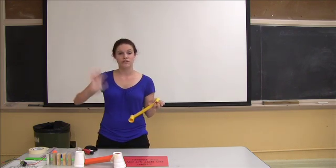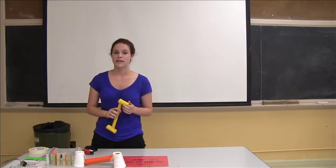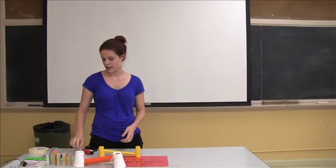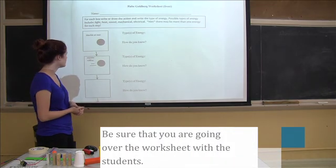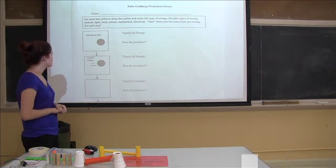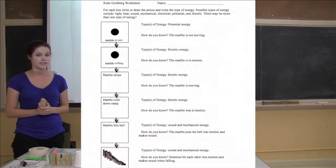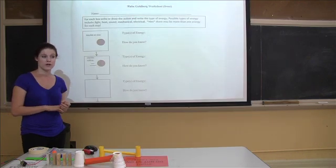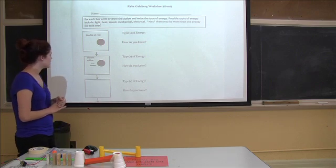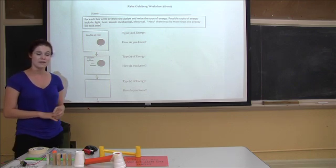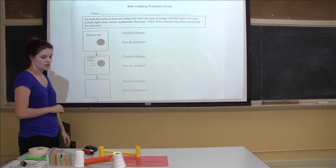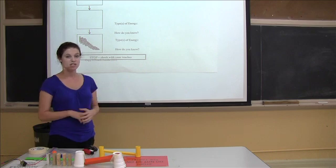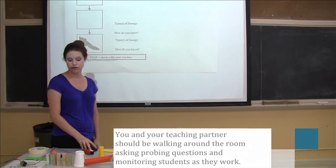After you complete that portion of your machine, raise your hand and we'll come around and check your worksheet. If we approve, you'll get the rest of your materials to complete the machine so that you can turn on a small light bulb. So before we begin, let's take a look at our worksheet together. You'll notice that the boxes on the left side have the action that's happening — for example, the marble is at rest in the first step. On the right of that, you need to write down what type of energy it is and how you know. Remember that it might have two or more types of energy for each step. Some boxes are blank — you need to fill in those steps yourself to complete the final task, which is to get the dominoes to fall over. For our experiment, we're going to be using blocks instead of dominoes.